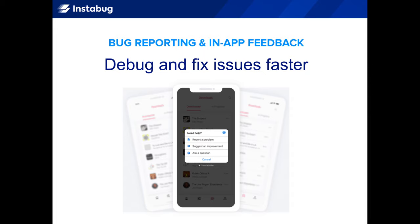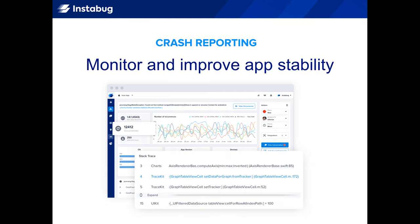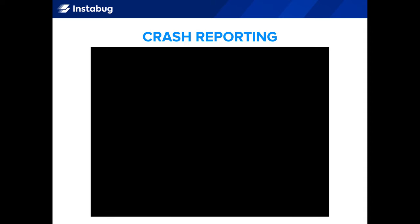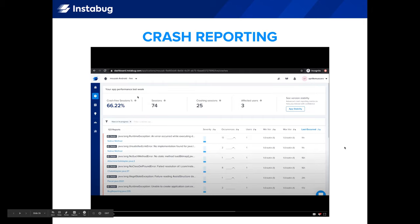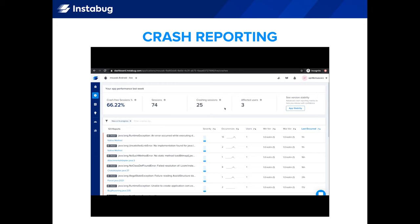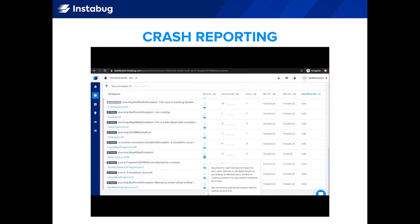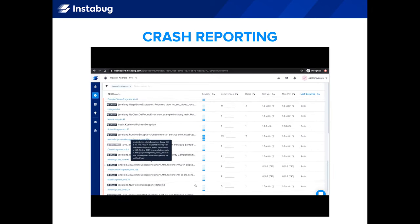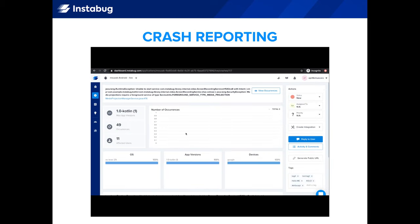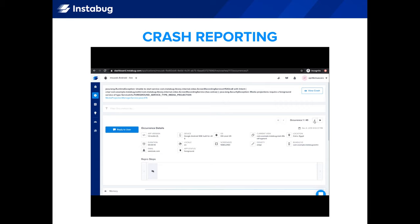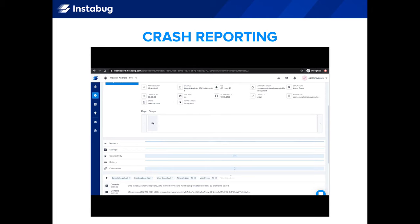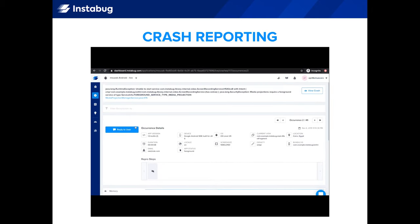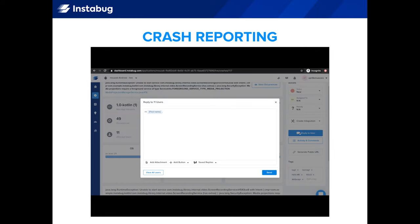That was a glimpse at Instabug's bug reporting product. Instabug also offers crash reporting. On the crashes page, you'll see your app's performance over the past week, including crash recessions, total sessions, crashing sessions, and affected users, as well as a list of all crashes and their severity, so you can quickly identify the most important ones to fix. You'll be able to view which OS versions, app versions, and devices were affected, as well as stack trace information. You can view all occurrences of a crash individually, along with device, environment, and session details, as well as logs. You can reply to individual affected users — or all affected users — to let them know you fixed the crash.